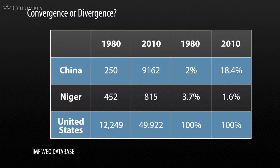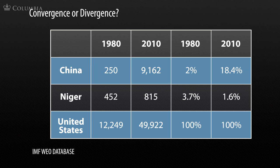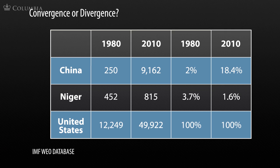Now let's fast forward to the year 2010. China experienced decade after decade of double-digit economic growth, with the economy doubling every seven years on average. By 2010, China was no longer at $250 per person — it was at nearly $10,000 per person. The United States by then was at about $50,000 per person. Niger, unfortunately, was still stuck at below $1,000 per person and still among the least developed countries.